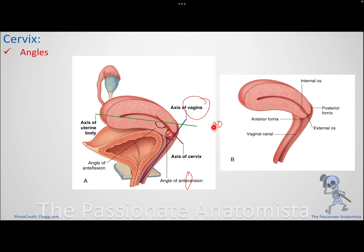The anteflexion is the angle the cervix makes with the long axis of the uterus itself — it does not have a 'v' for vagina, so it is with the uterus. The angle between the long axis of the cervix and the long axis of the uterus is around 125 degrees. So: anteversion with vagina is 90 degrees; anteflexion with uterus is 125 degrees.